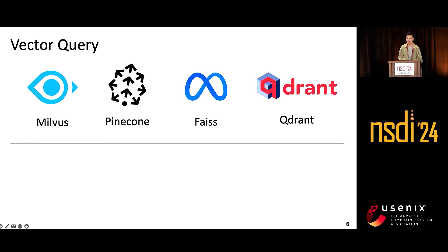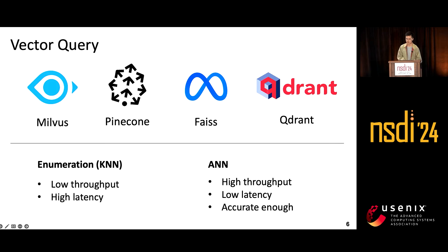Recently, many vector databases support fast and accurate vector query for upper-layer AI applications, such as Milvus, Pinecone, and Faiss. KNN uses enumeration and returns the exact top-K results, but requires searching the entire dataset, making it impractical for large data due to high latency and low throughput. Approximate nearest neighbor search trades query accuracy for query latency. Since the LLM model is not 100% accurate itself, ANN is accurate enough to serve AI applications and is widely used in existing vector databases.